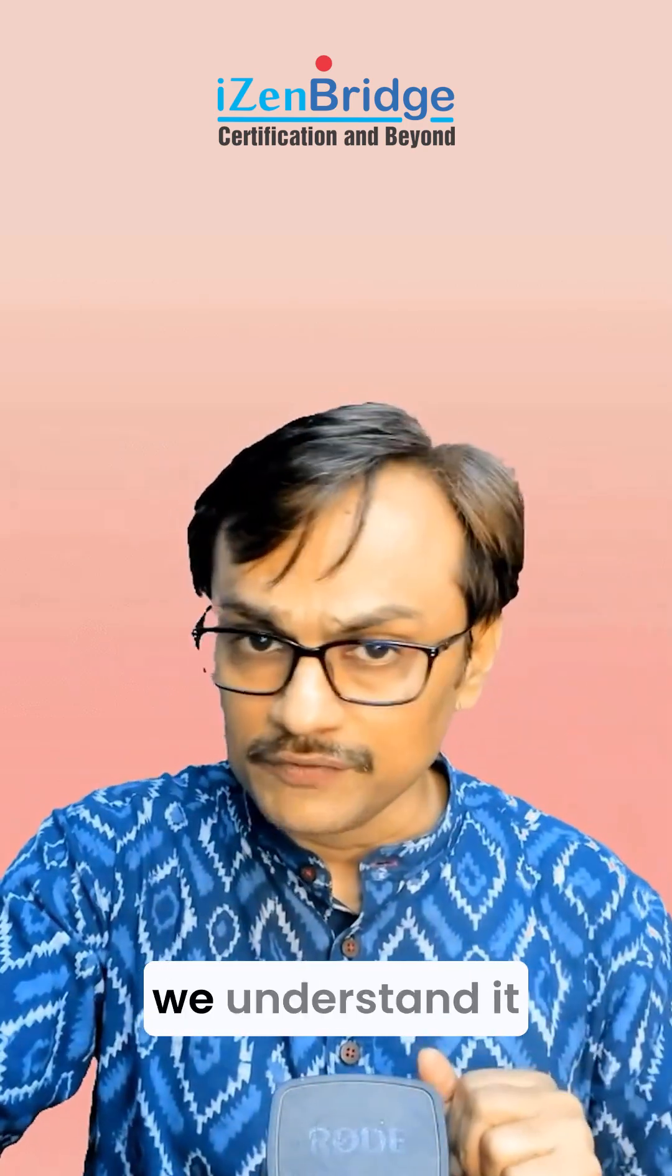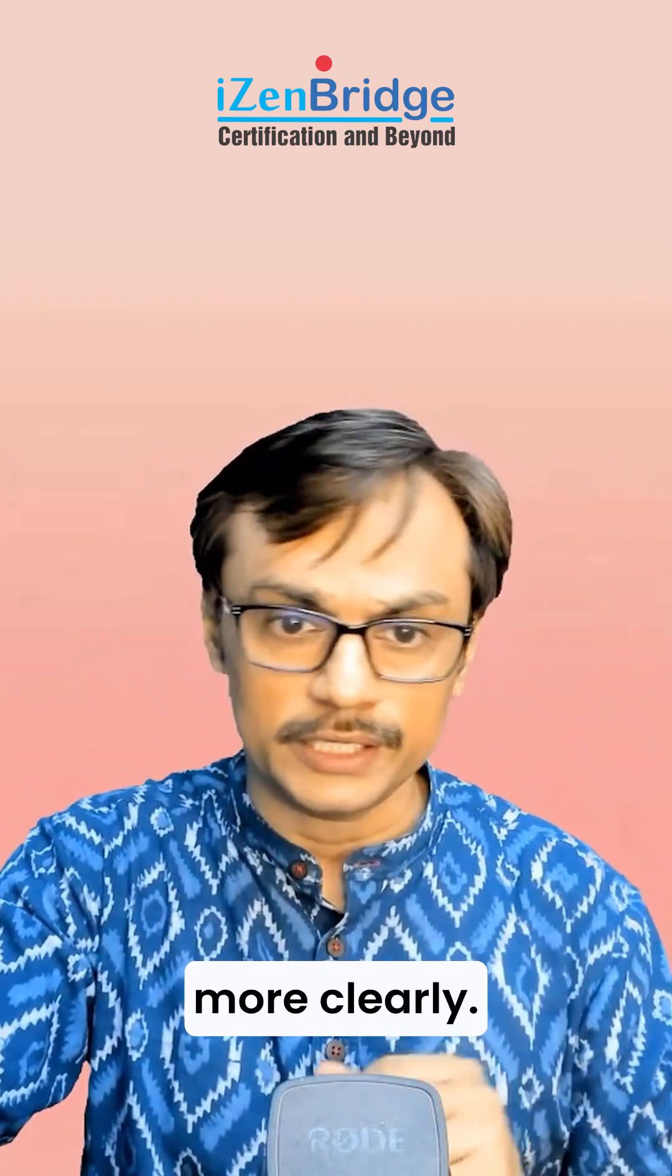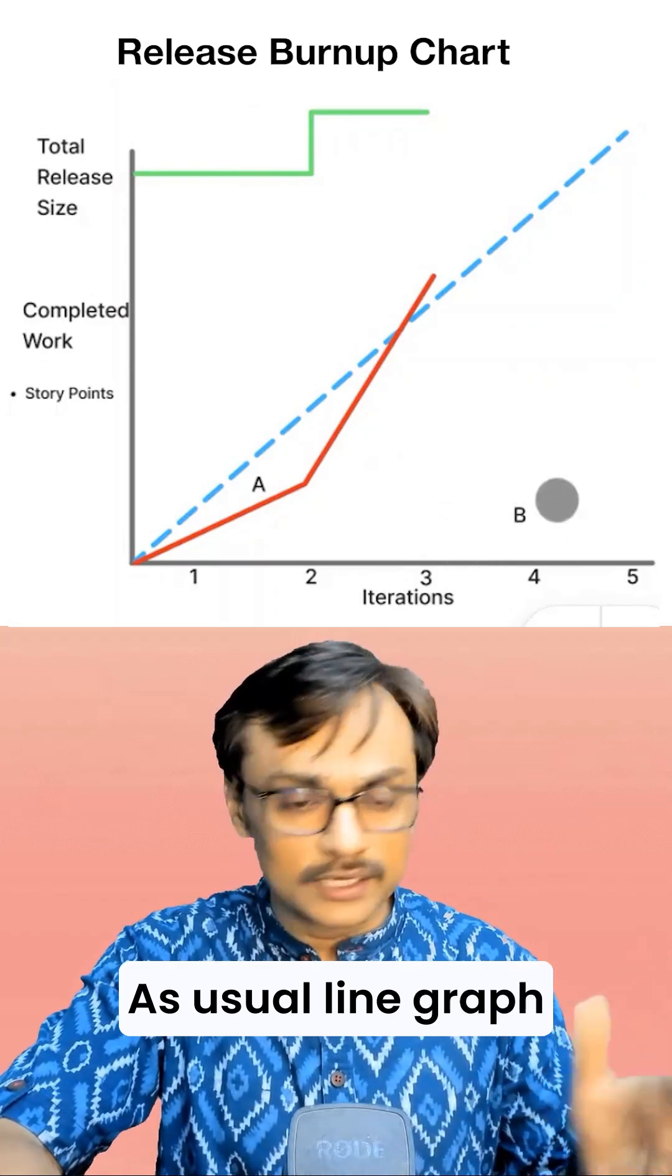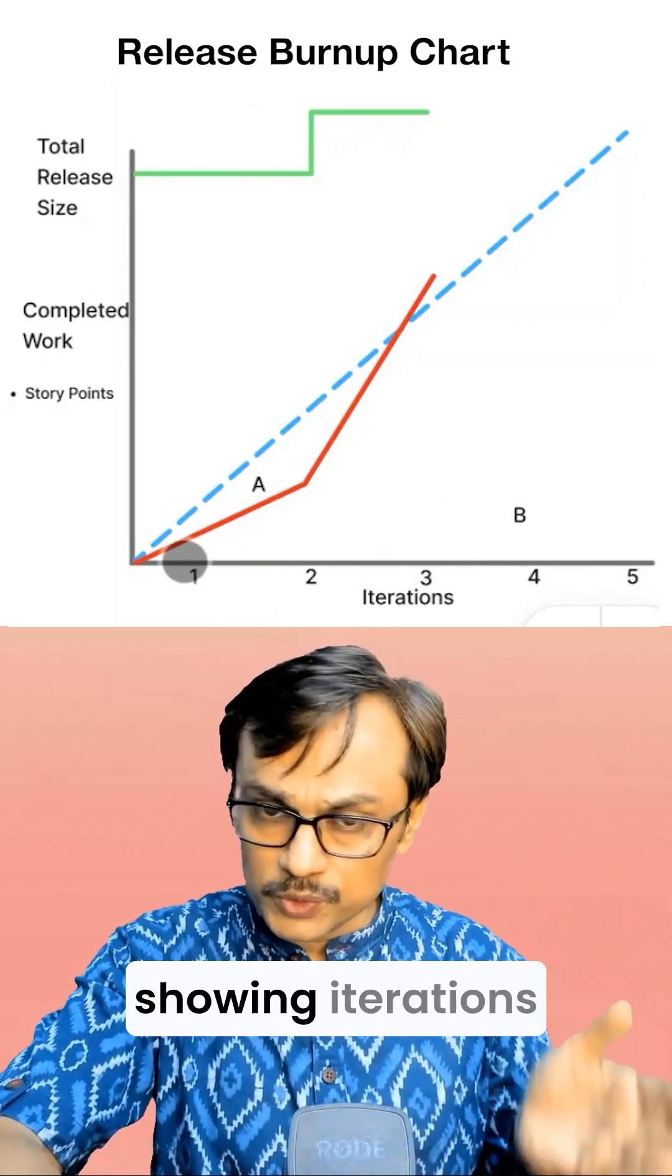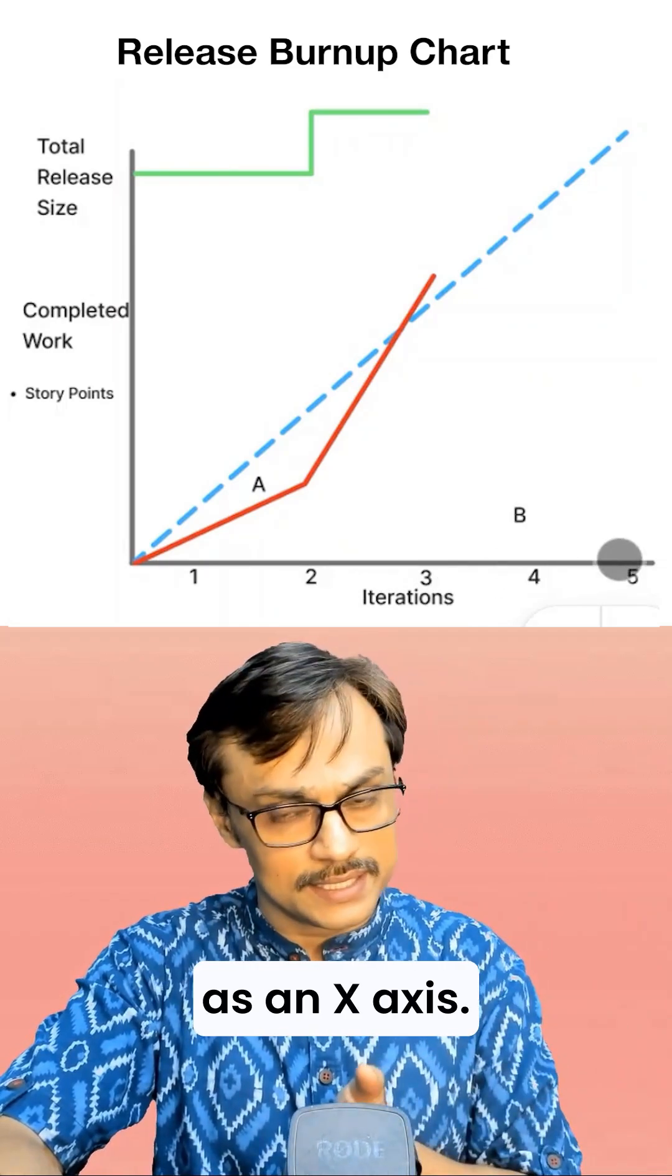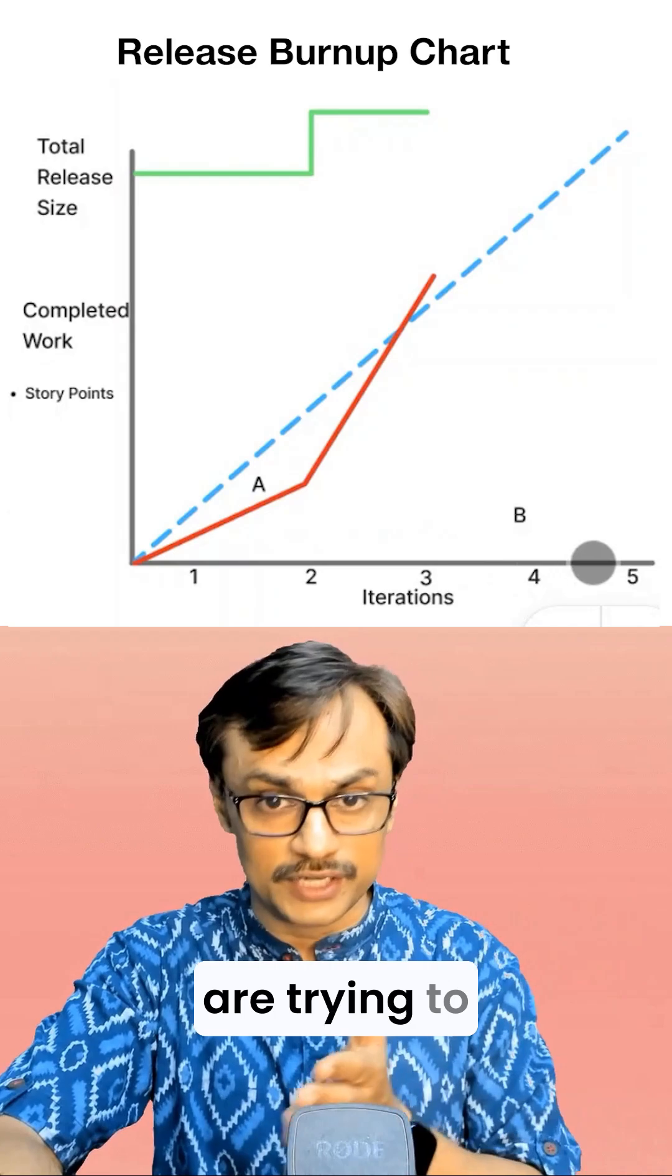Let's look at the graph so that we understand it more clearly. As usual line graph, you have an x-axis. Since it's a release level graph, you are showing iterations as an x-axis. So at the end of every iteration we are trying to see where we are.